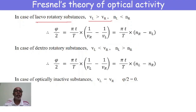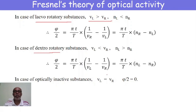For a dextrorotatory substance, v_L < v_R, meaning v_R > v_L, or equivalently n_L > n_R. Therefore φ/2 = (πt/T)(1/v_L − 1/v_R) = (πt/T)(n_L − n_R).